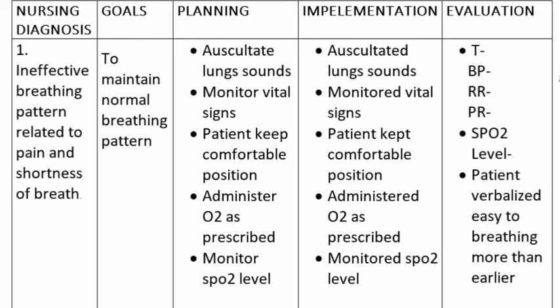Nursing Diagnosis 1: Ineffective breathing pattern related to pain and shortness of breath. Goal: To maintain a normal breathing pattern. Planning includes: auscultate lung sounds, monitor vital signs, keep the patient in a comfortable position, administer oxygen as prescribed, and monitor saturation level.